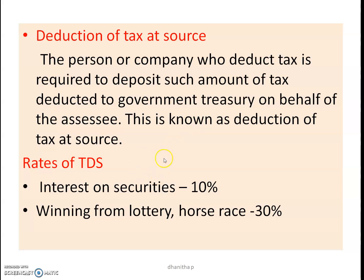TDS rates: Interest on securities — the TDS rate is 10%. For casual income such as card games, entertainment programs, gambling, and lottery winnings — that is 30%. So interest on securities attracts TDS at 10%, and casual income attracts TDS at 30%.